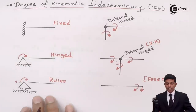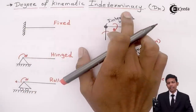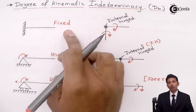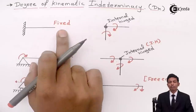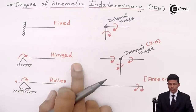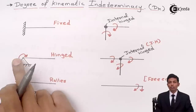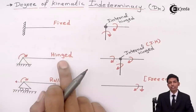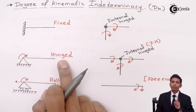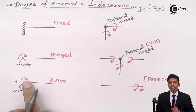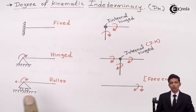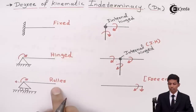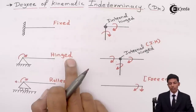Now let's see degree of kinematic indeterminacy for different supports. In a fixed support there is no DK, meaning DK = 0. In a hinge support DK = 1, because there is one rotation. In a roller, with axial deformation DK = 2, but neglecting axial deformation DK = 1. So for both hinge and roller we commonly use DK = 1.